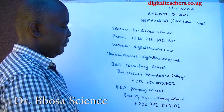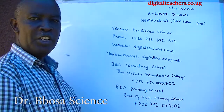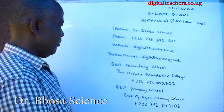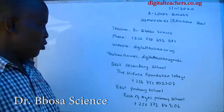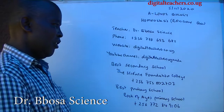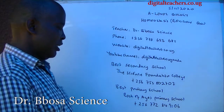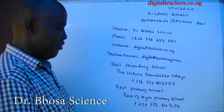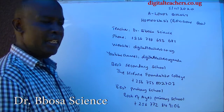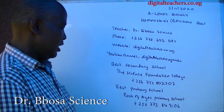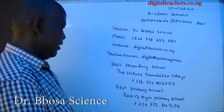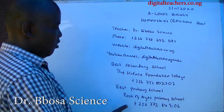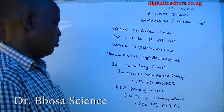Here you find videos for physics, chemistry, and biology. The best secondary school is the Science Foundation College, plus 256-753-802-709. The best primary school is Locke of Ages Primary School, plus 256-772-849-106.